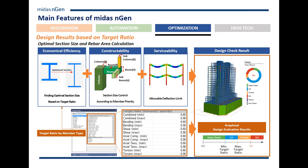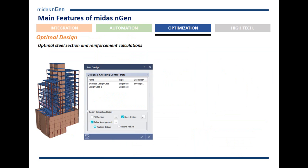Depending on the code, the program also gives you very clear visuals — color-coded sections based on what passes the design code, what's failing, and what needs to be replaced or checked. This makes it very easy and time-saving to identify what areas the engineer needs to focus on and what areas need to be replaced or redesigned.